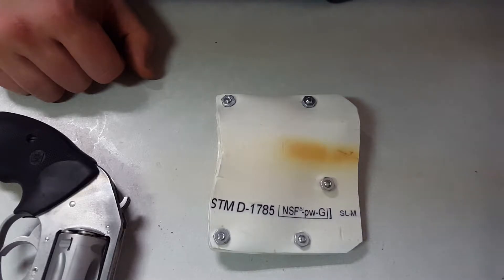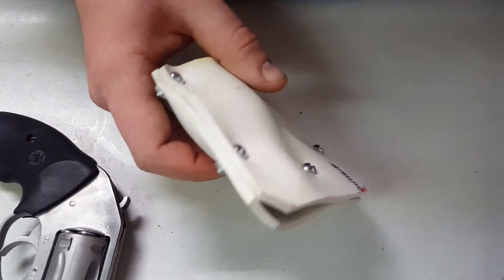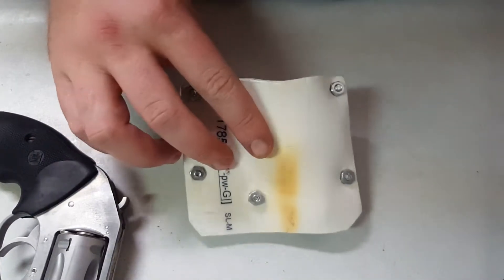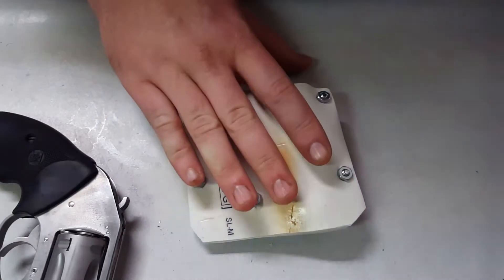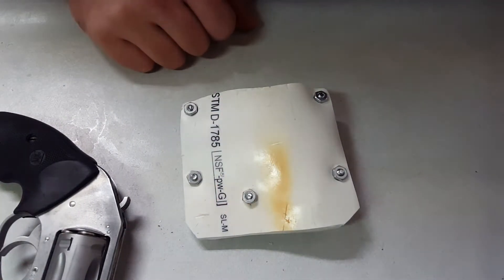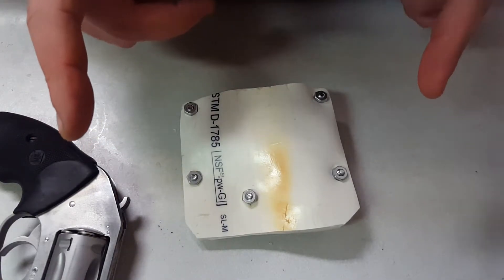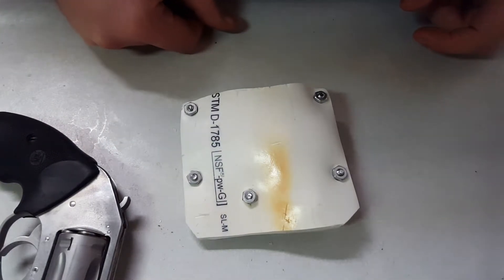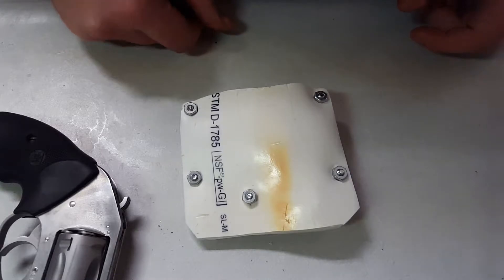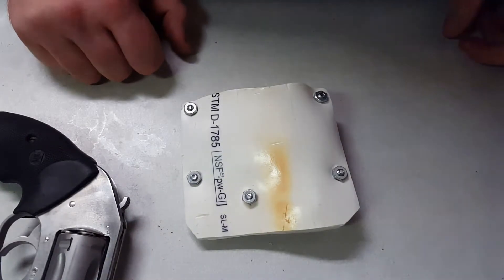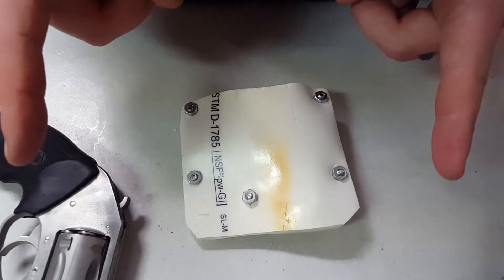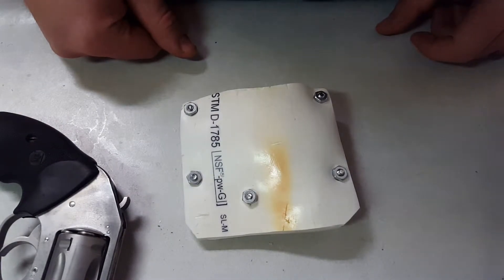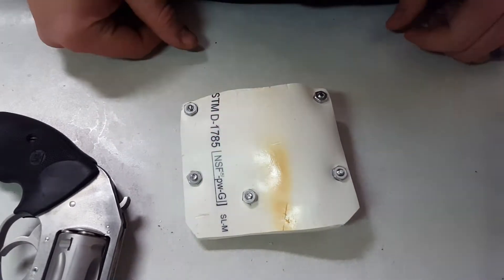But yeah let's get back to the holster here. This is just your normal schedule 40 PVC. The diameter I started out with, I had to use two pieces of PVC. I bought a five foot piece and I cut two pipes about five and a half inches long and I stuck them in the oven until they got nice and flimsy where you can work with them.